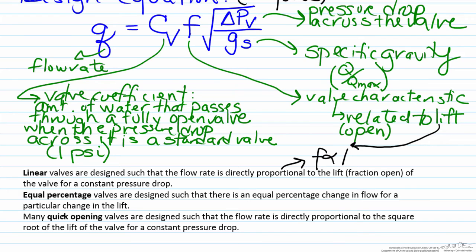For the case of equal percentage we have the case where there is an equal percentage change in flow for a particular change in the lift. In other words, dF/dL is proportional to F. Another way to say this is that F equals R raised to the lift minus one. This represents the lift, which in some textbooks can be represented by a cursive L, where R is a constant parameter that is a particular aspect of the valve you're using.